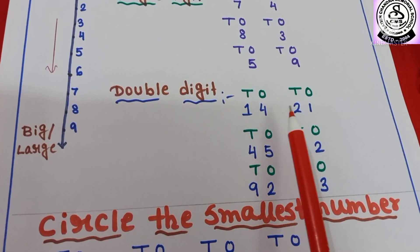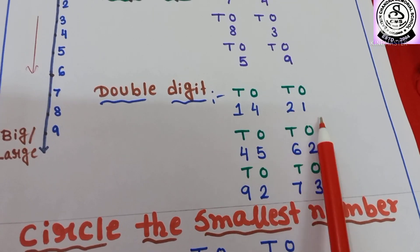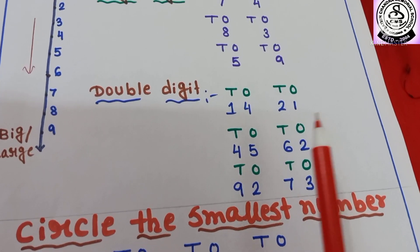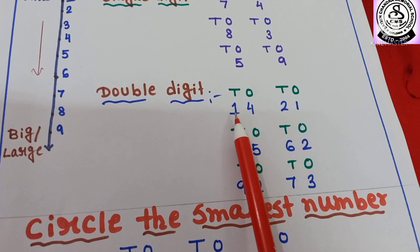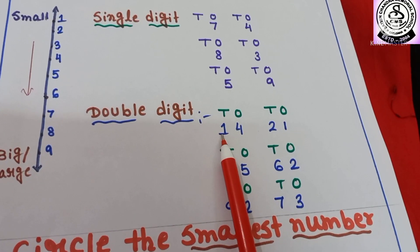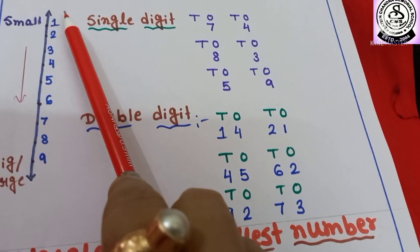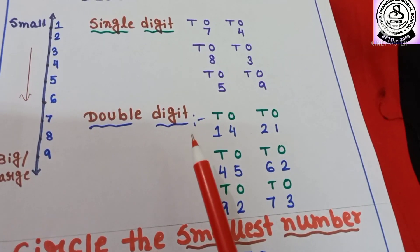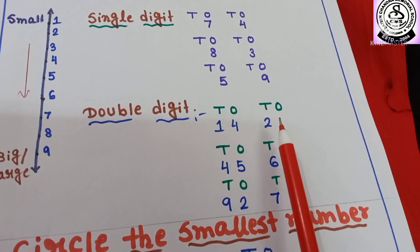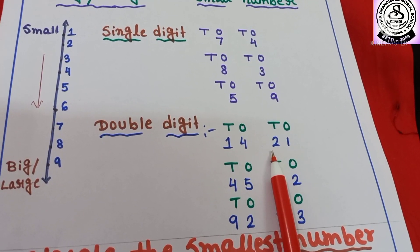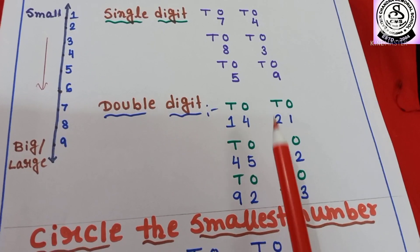Now here I have written double digit, means two digit numbers. I have written first 14 and then 21. So, here you have to identify which one is small number. First you have to compare the first digit. Here first digit is one and here two. After one comes two, so one is smaller than two. That means 14 is smaller than 21. You have to identify which one is small number and then circle it.